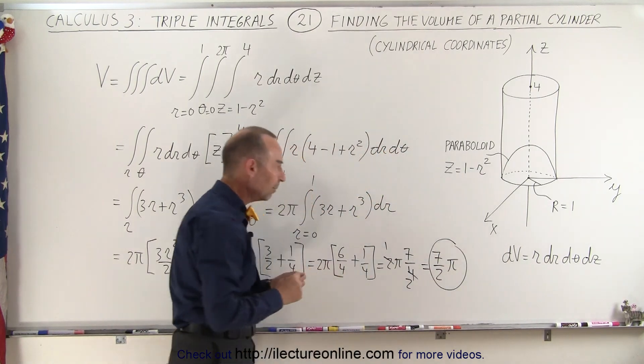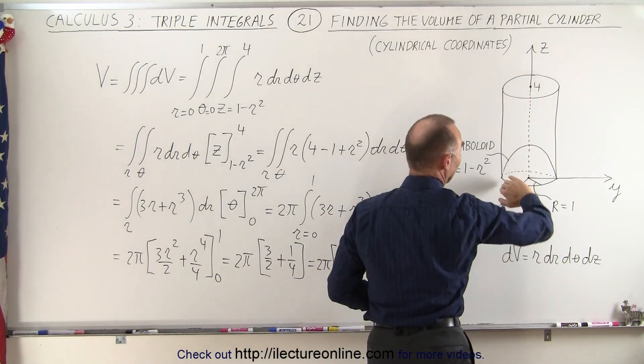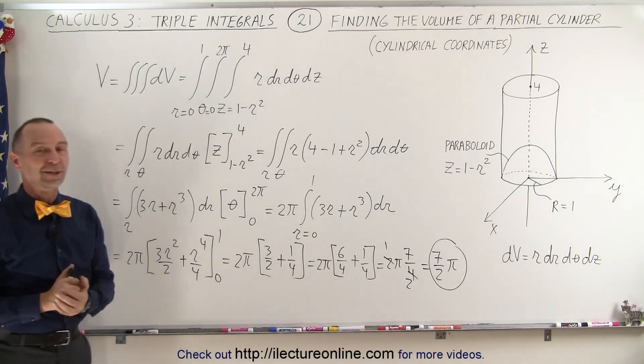And that is the volume of the region between z equals 4 and the paraboloid inside the cylinder. And that's how it's done.